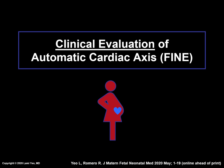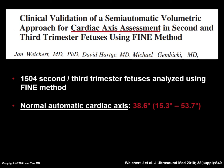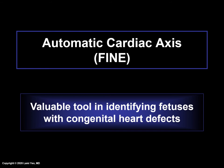Automatic cardiac axis calculated by FINE has recently been evaluated in the clinical setting. Weikert et al. analyzed more than 1,500 second- and third-trimester fetuses using the FINE method for automatic cardiac axis assessment. The normal automatic cardiac axis was found to be 38.6 degrees. Significant differences from the normal cardiac axis were reported for conotruncal anomalies as well as right and left heart defects. For example, right heart defects had an automatic cardiac axis of 60.4 degrees. This suggests that automatic cardiac axis calculated from the FINE method may be a valuable tool in identifying fetuses with congenital heart defects.